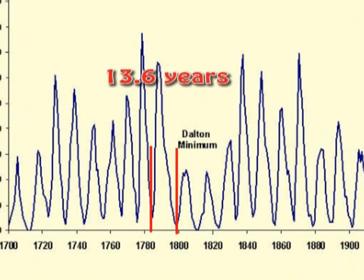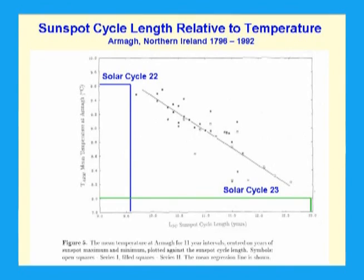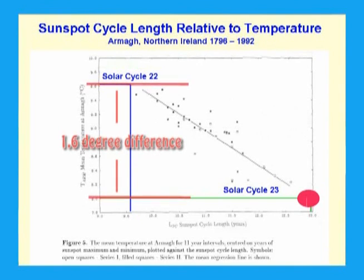I have plotted on this figure what a 13-year-long solar cycle 23 would look like. It would result in a 1.6 degree decline in temperature. This effect is upon us right now — in a few short years we will have a reversal of the warming of the 20th century.